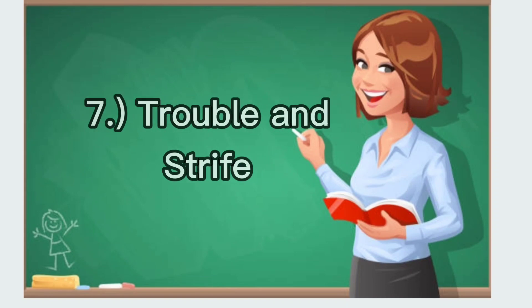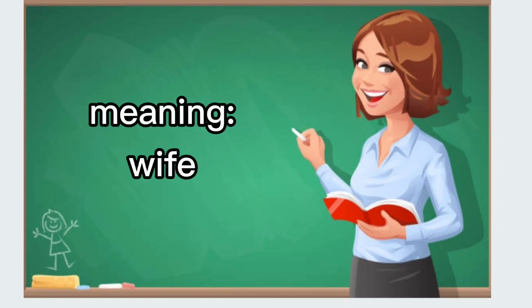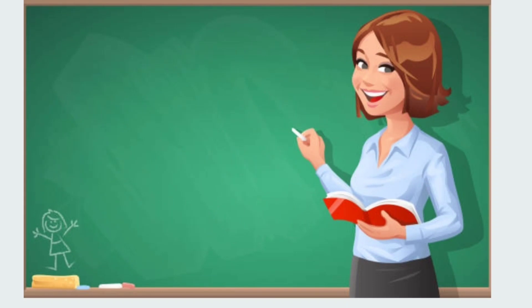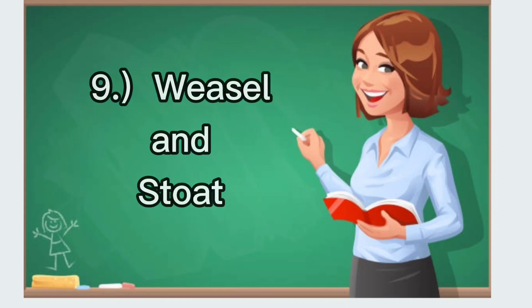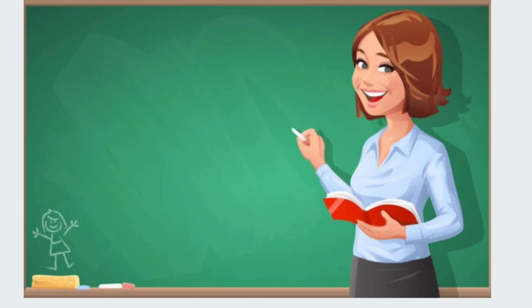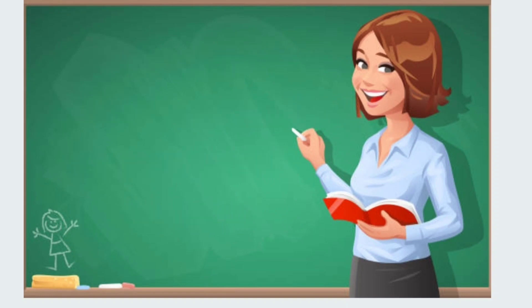Seven: trouble and strife, meaning wife. Example: the trouble and strife is cooking dinner. Nine: weasel and stoat, meaning coat. Example: where is my red weasel and stoat?